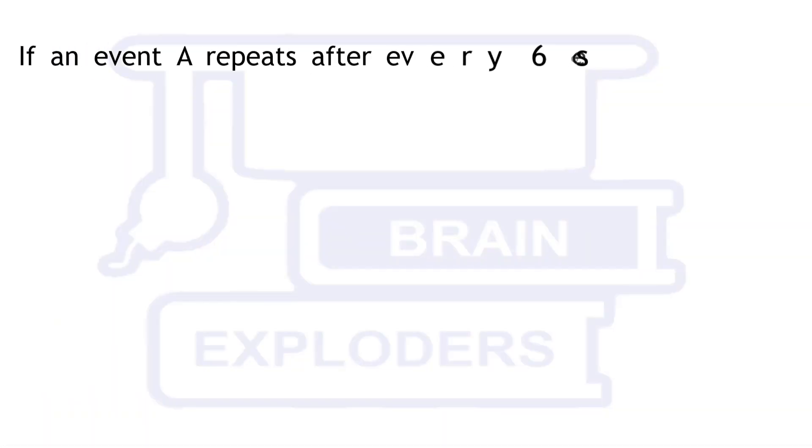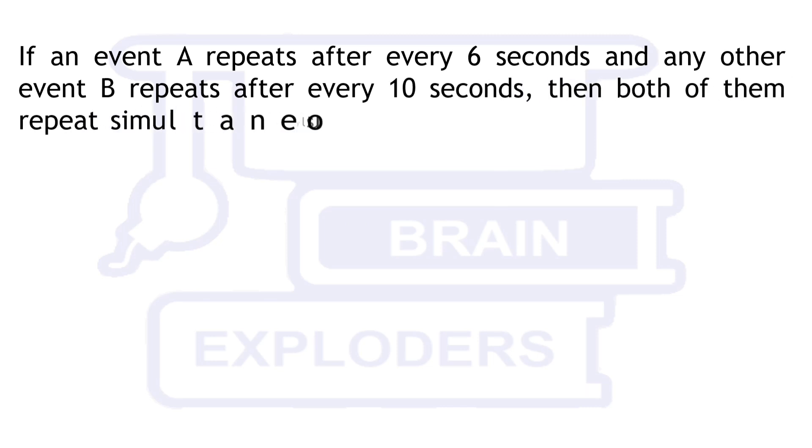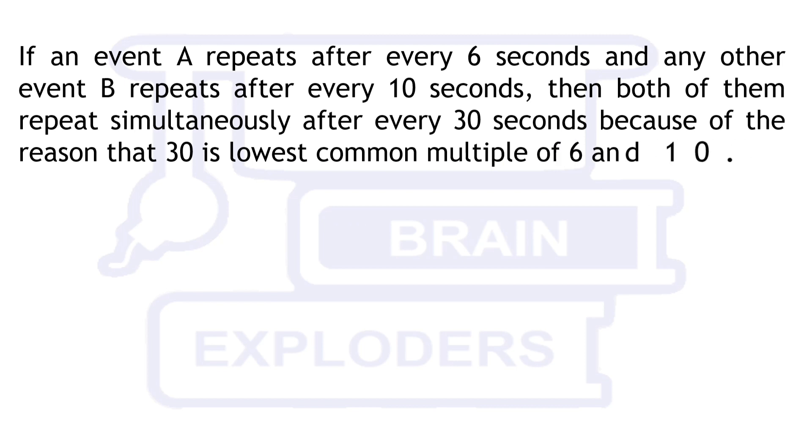If an event A repeats after every 6 seconds and another event B repeats after every 10 seconds, then both of them repeat simultaneously after every 30 seconds because 30 is the lowest common multiple of 6 and 10.